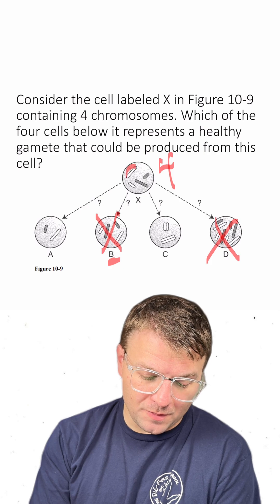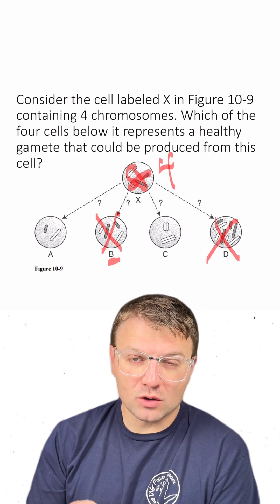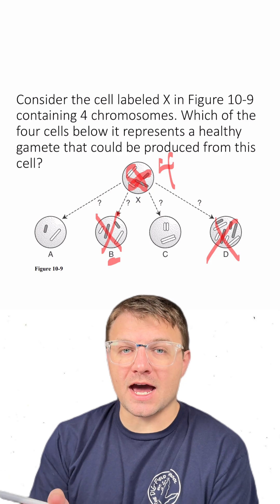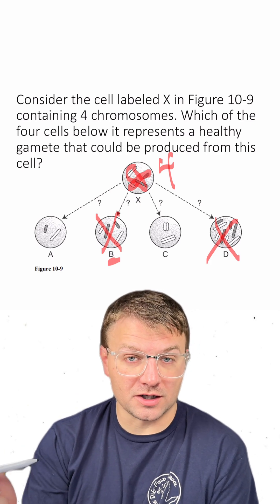If we look at our cell, we have two pairs of homologous chromosomes. Remember that the chromosomes at the end of meiosis are going to have one chromosome per homologous pair.